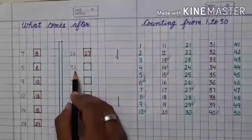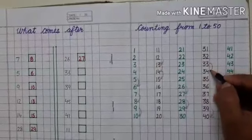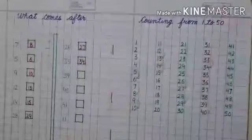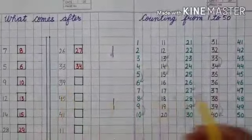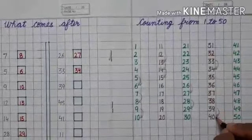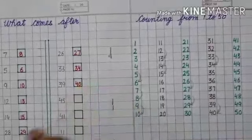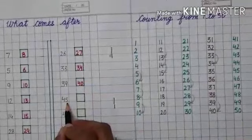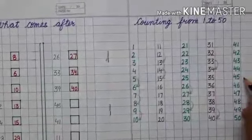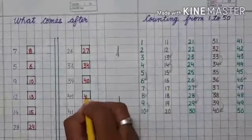Next number is thirty-three. You have to take the series of thirty-one to forty. What comes after thirty-three? Thirty-four — thirty-four is the next number. Write thirty-four in the box. Next number is thirty-nine. You have to see the series of thirty-one to forty. What comes after thirty-nine? That is forty. Write forty in the box. Next number is forty-five. You have to see the series of forty-one to fifty. What comes after forty-five? Forty-six — because forty-six is the next number. Write forty-six in the box.